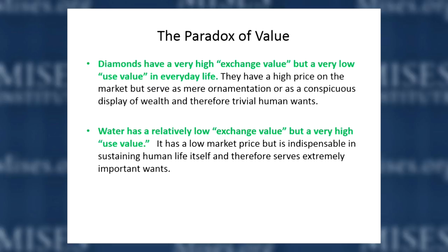So that was the puzzle. Even though bread had a very high use value to human beings — it kept them fed and from dying of thirst — it had a very low market price per unit of weight. On the other hand, diamonds, which served very trivial wants, had a very low use value but a very high exchange value — exchange value being another word for price. That was the paradox of value.